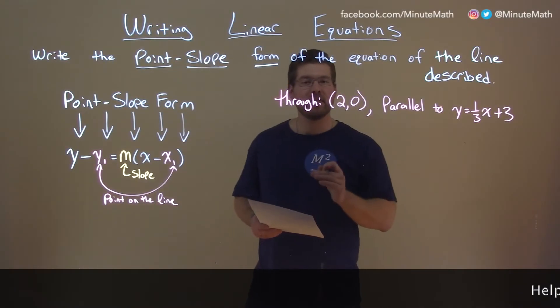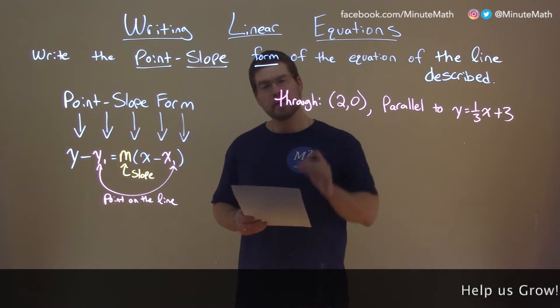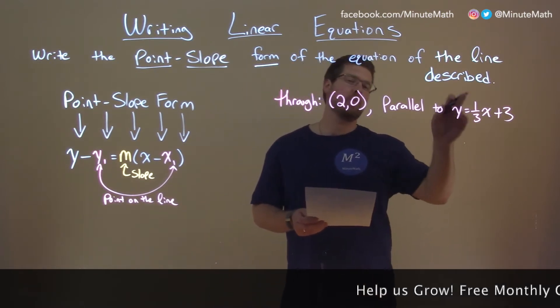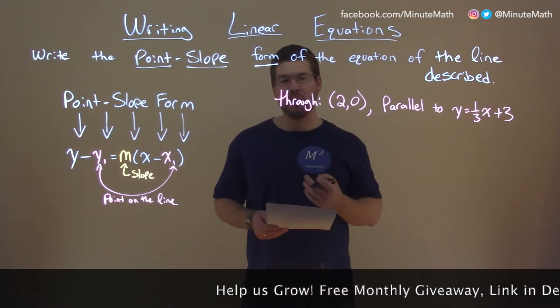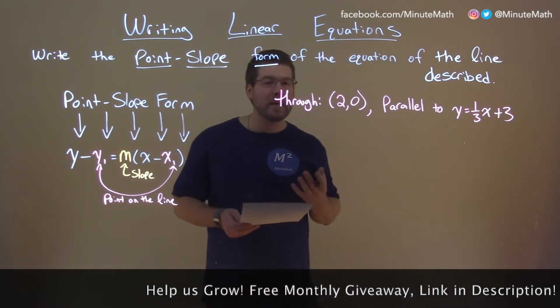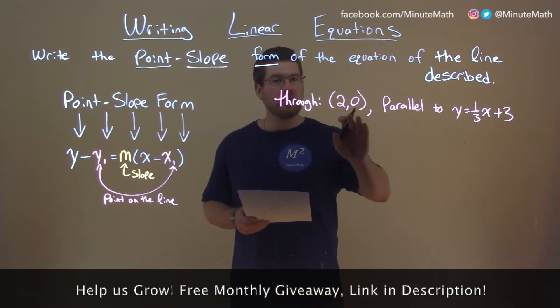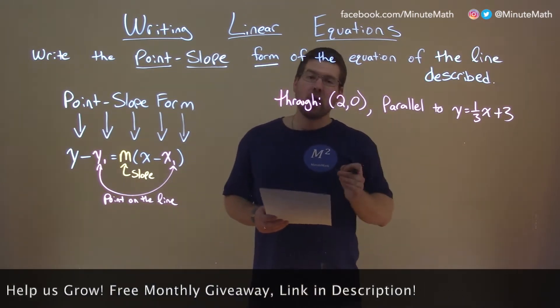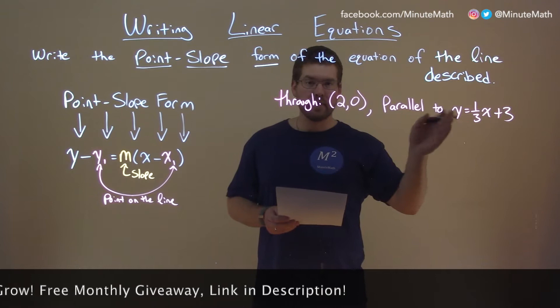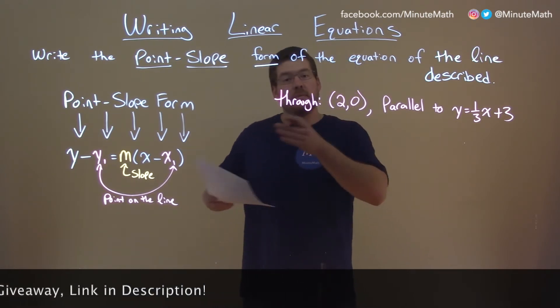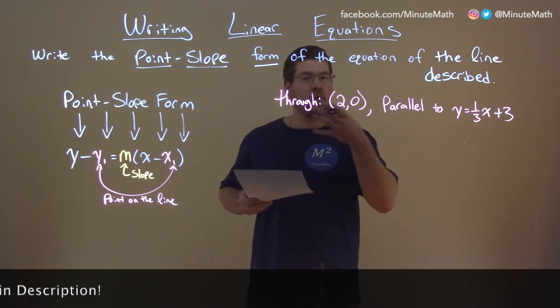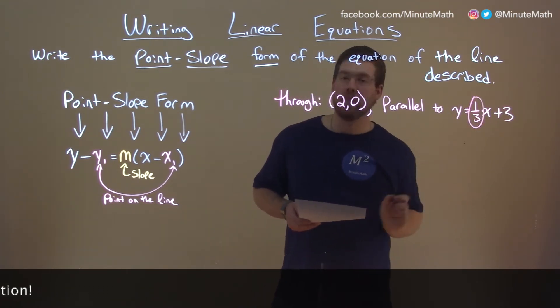If I was given this problem through (2,0) and it's parallel to y equals 1/3x plus 3, and we want to write this in point-slope form, well, what do we need to do? We have a point, we need a slope. They give us our line is parallel to this line. This line has a slope of 1/3. Parallel lines have the same slope, so therefore our line has a slope of 1/3.